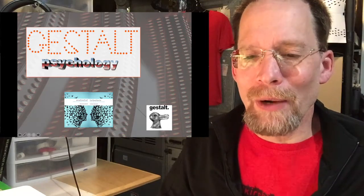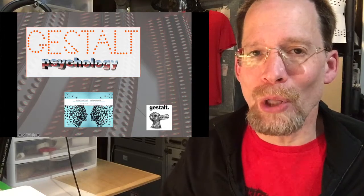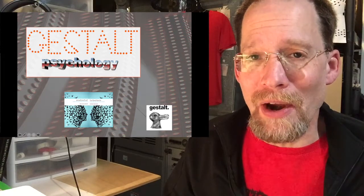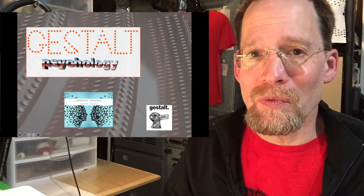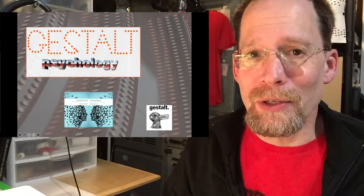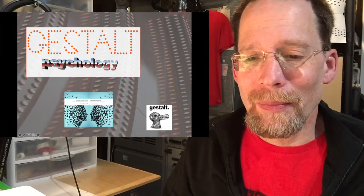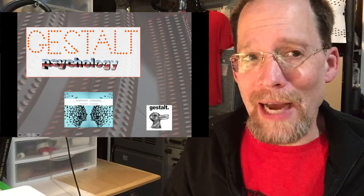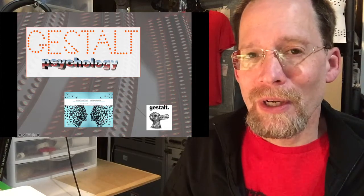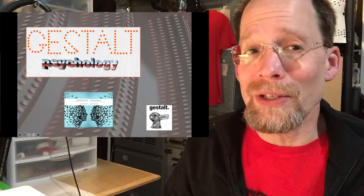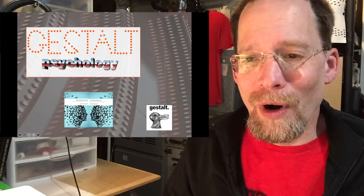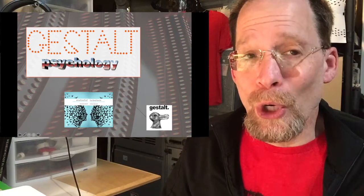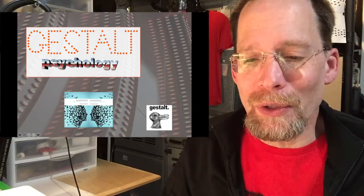Maybe you can make out the word Gestalt there — it's spelled in small orange dots. The letters don't actually appear there in full form, but they do appear to be letters because of the arrangement of the dots. If you looked at any one or a small group of those dots, it wouldn't make any sense. But all of them together form a Gestalt — a word that should be having some meaning for you by now.